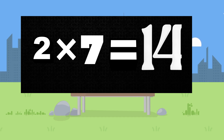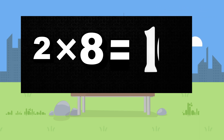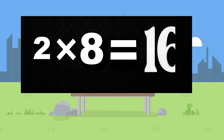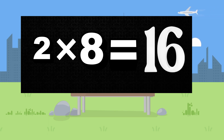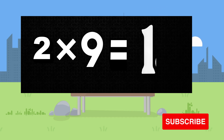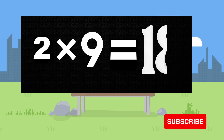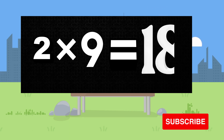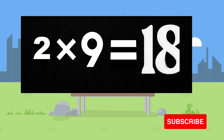2 multiply by 7 equal 14. 2 multiply by 8 equal 16. 2 multiply by 9 equal 18.